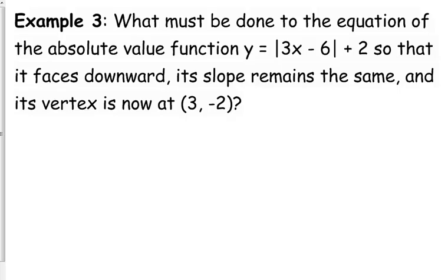Alright, so here we are given an equation and we're asked to manipulate it. It asks us to make sure that it faces downward. Right now it's facing upward because there's not a negative in front of the absolute value. So we need to fix that. We need to keep the slope the same, so that means we don't need to mess with this number right here. We don't want to put anything in front of this absolute value function because that's going to affect our slope.